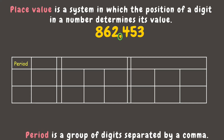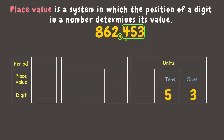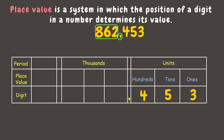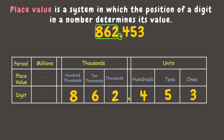The first period is called the units period. Under this are the ones, tens, and hundreds place. The next period is the thousands period. Under this are the thousands, ten-thousands, and hundred-thousands place values. Then the third period is the millions period.